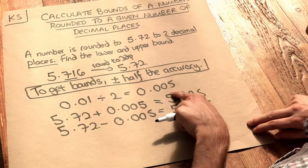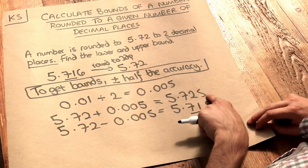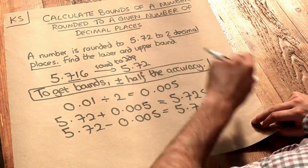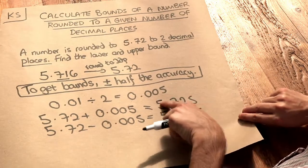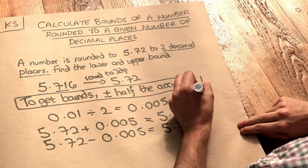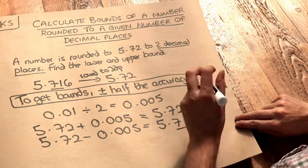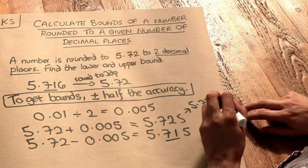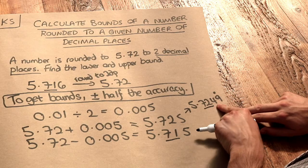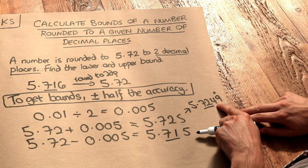You might be thinking well this number to two decimal places is 5.73 not 5.72 but that's because this number is effectively 5.7249 recurring. Now if we were to round that to two decimal places we look at the first two digits, look at the one after. Is that five or more? No.